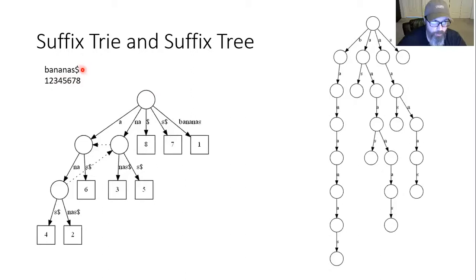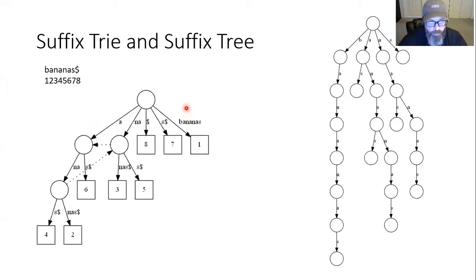What is the dollar sign doing here? When we go through Ukkonen's algorithm, you'll see that if we don't have a special character at the end, the algorithm will not finish properly — it will just stop and won't be correct. So you need a special character so that the tree gets constructed properly.